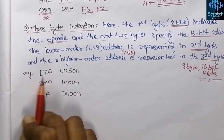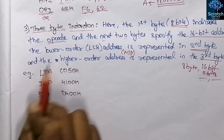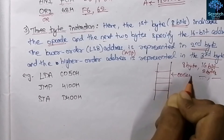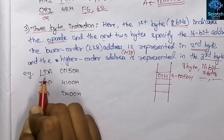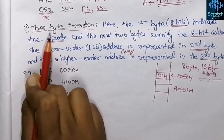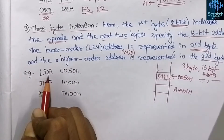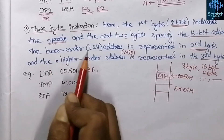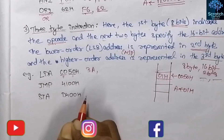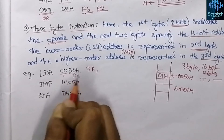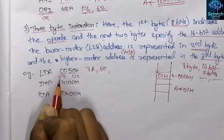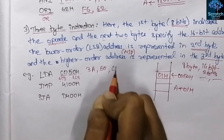The first example is LDA C050 hex. This instruction loads the data from address C050 hex into the accumulator. In memory, at location C050 hex, suppose we have data 01 hex — on execution of LDA, this data 01 hex is stored in the accumulator. Why does it require three bytes? The first byte is the opcode of LDA which is 3A hex. The second byte is the lower order address — LSB — which is 50 hex, and the third byte is the MSB which is C0 hex.